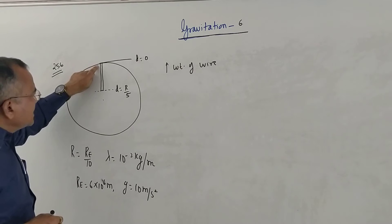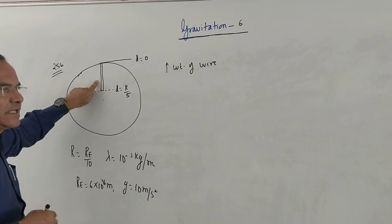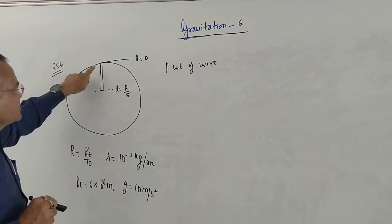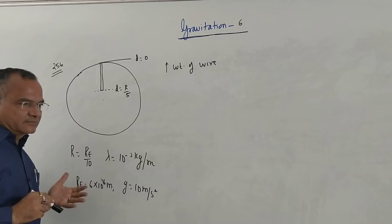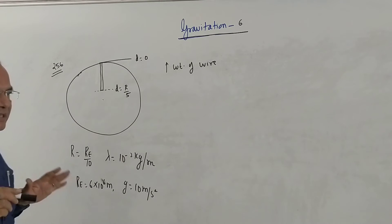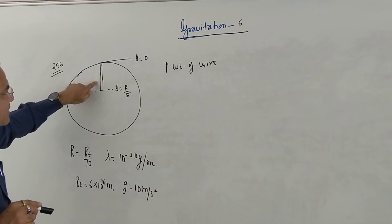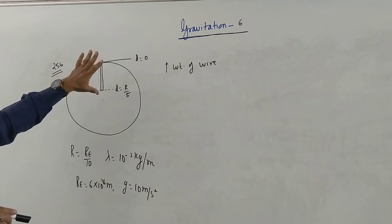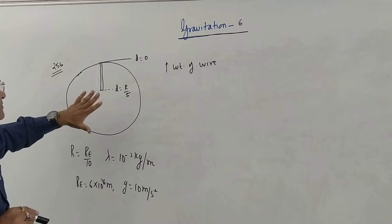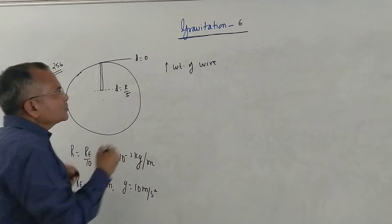The problem involves the fact that as we go deeper, acceleration due to gravity decreases. Because g decreases with depth, the weight of each element of the wire also decreases. We need to find the total weight of the wire by integrating along its length.